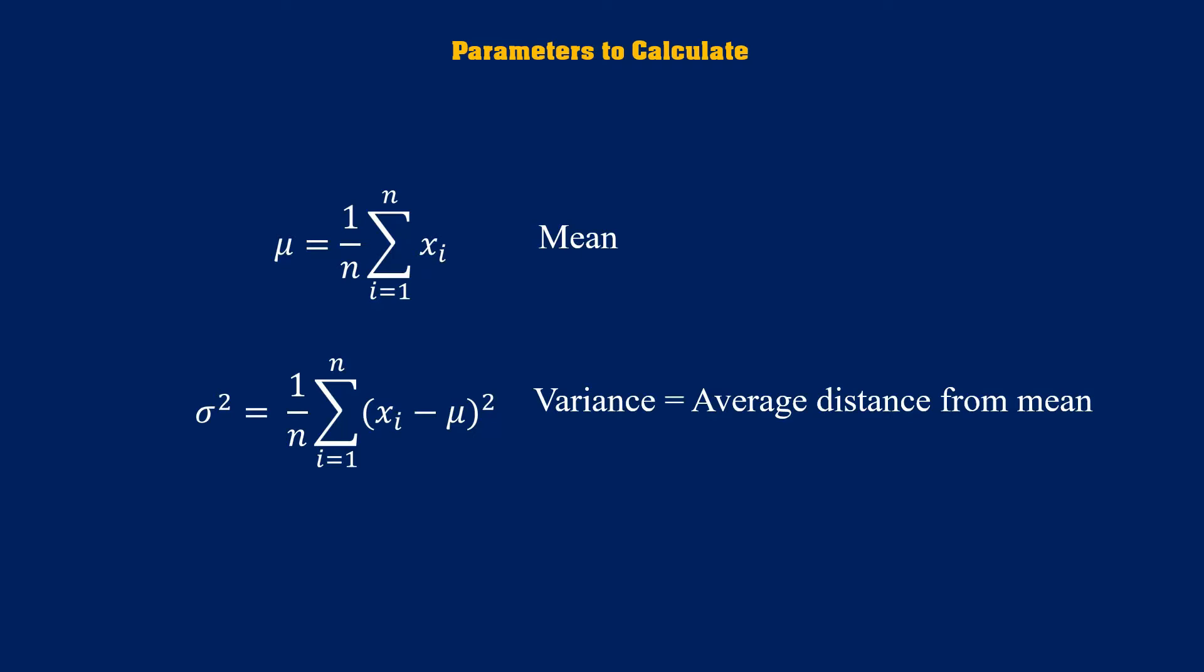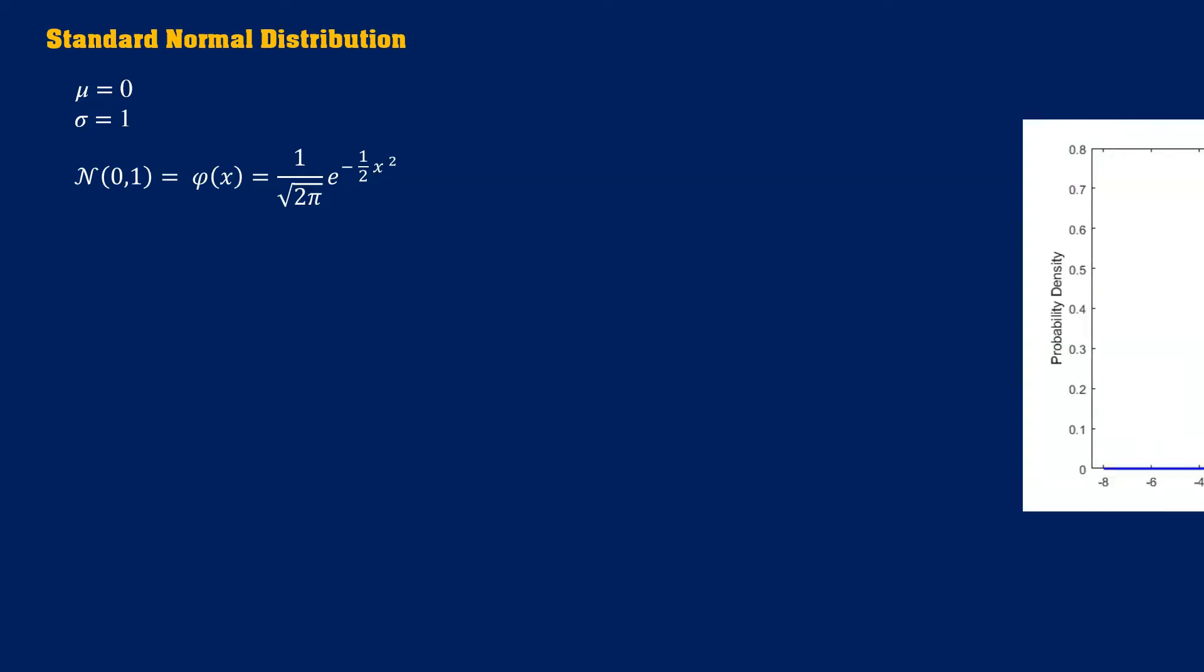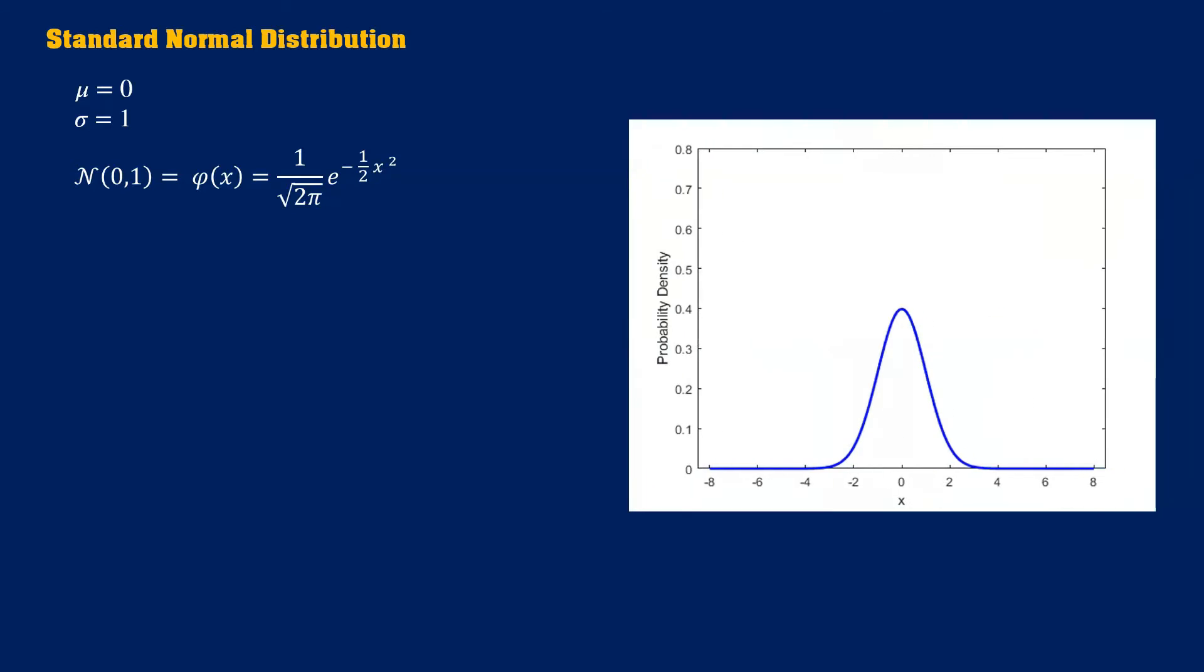Generally, based on the mean which is shown by mu and the variance which is shown by sigma, we have different normal distributions but there is a standard one. If we consider mean as 0 and the variance as 1, we can gain a standard normal distribution founded on this formula. This is also the figure of a standard normal distribution.